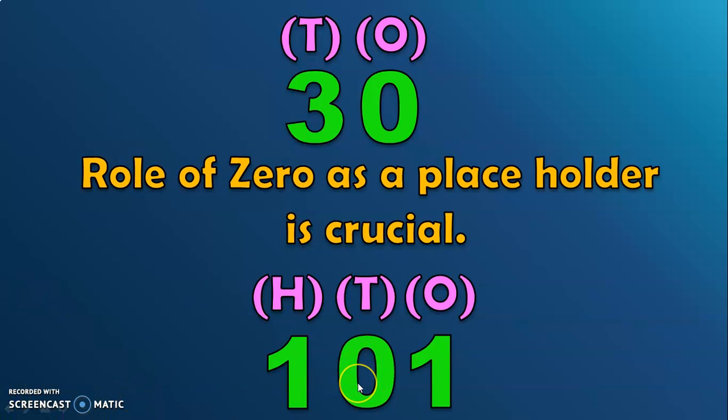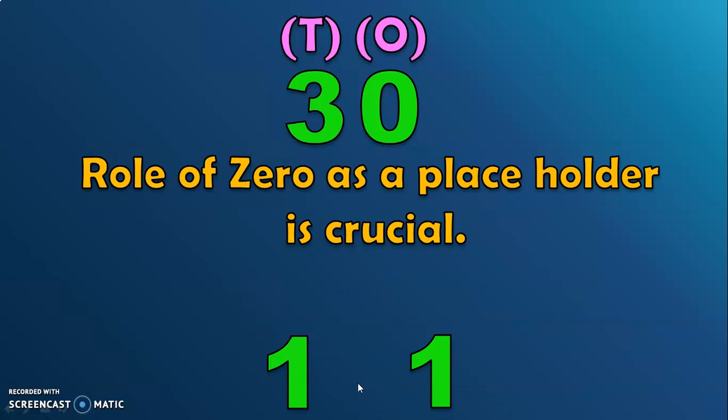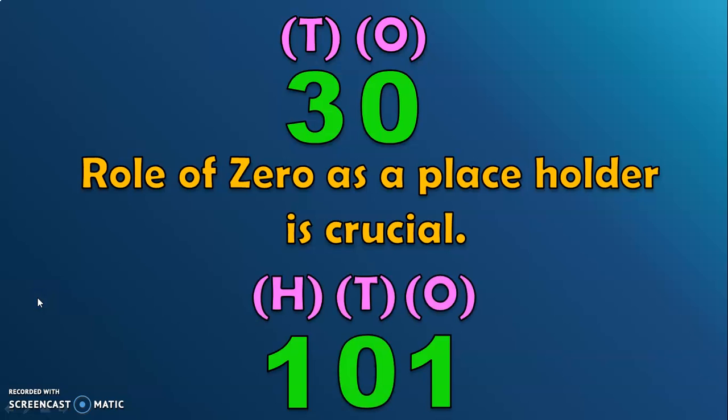Suppose you do not have this number zero. What will happen? The number one hundred one will become eleven. So, the digit zero is required as a placeholder in the tens place to make the number one hundred one. Zero does not have any place value in whichever place it is present. But, without it, the numbers do not have a proper meaning.